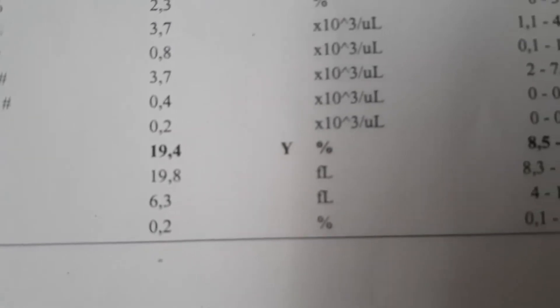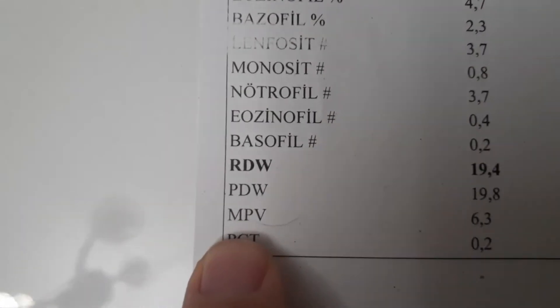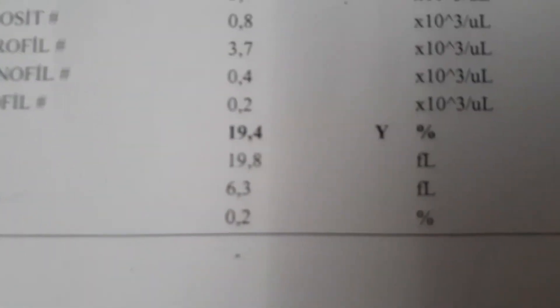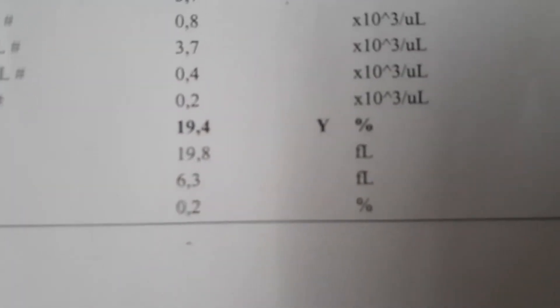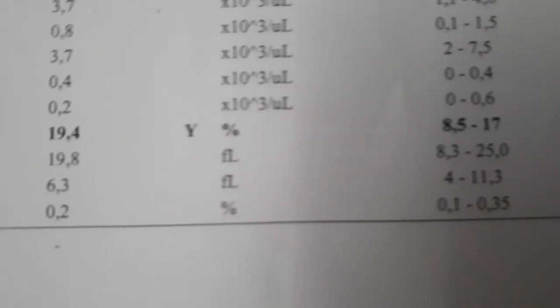PCT shows the platelet crit — the volume occupied by platelets as a percentage of blood, similar to how HCT relates to erythrocytes. It is calculated with the formula: platelet count × MPV ÷ 10,000. If the platelet count is normal it doesn't matter much, but elevated PCT levels are typical especially in ulcerative colitis and Crohn's disease, and can help with diagnosis in these conditions.